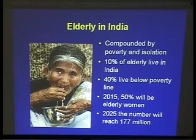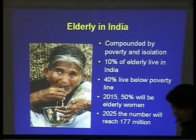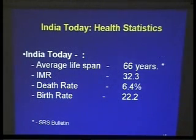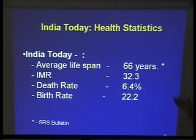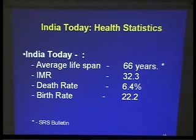Also, Alzheimer's and rates of dementia are on the rise. Clearly this is something we need to keep a finger on the pulse of. By 2020 to 2025, the number will be 177 million. The average lifespan is 66. But let me tell you something: if you have a mental illness, your life expectancy is 20 years shorter than the general population — 20 years shorter. That's mighty significant.